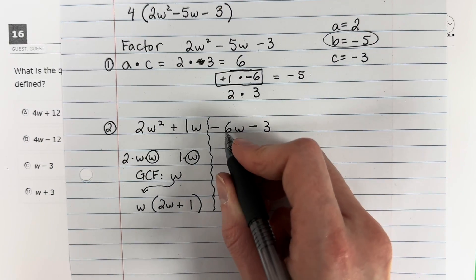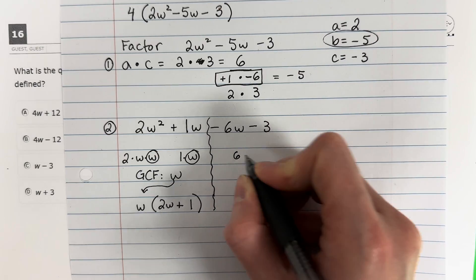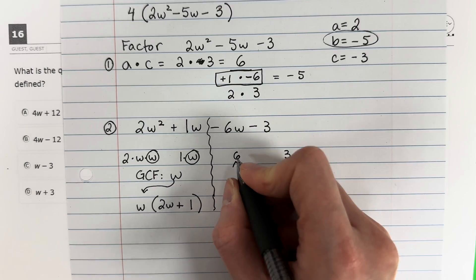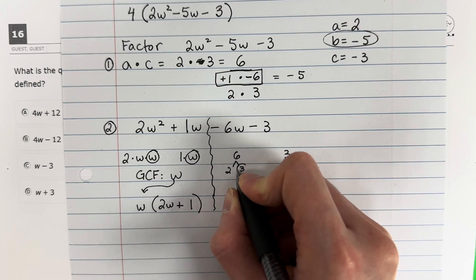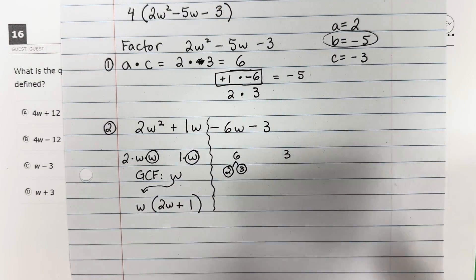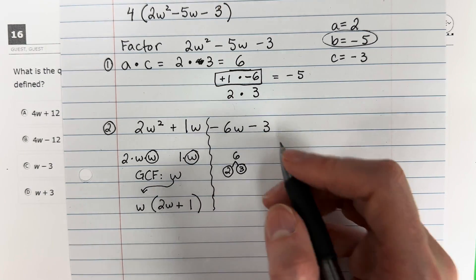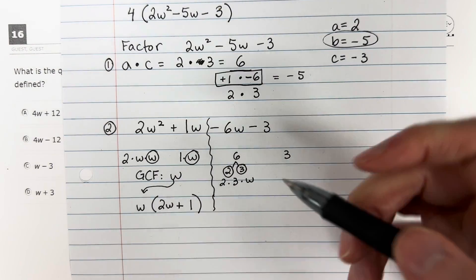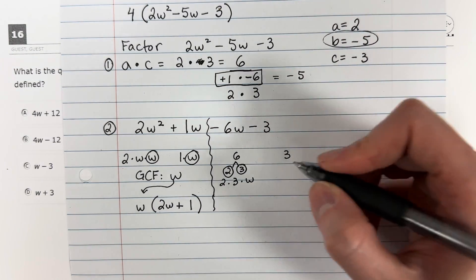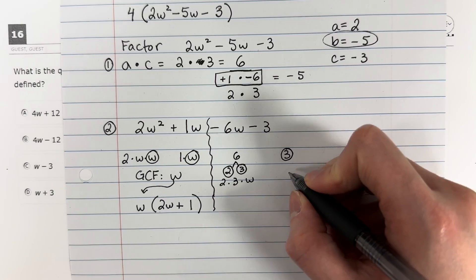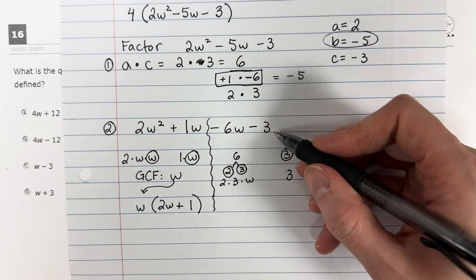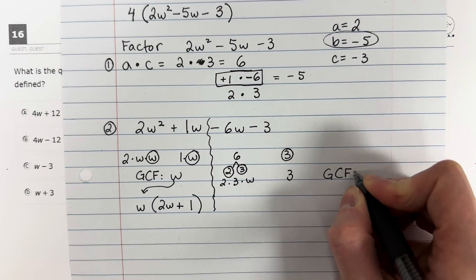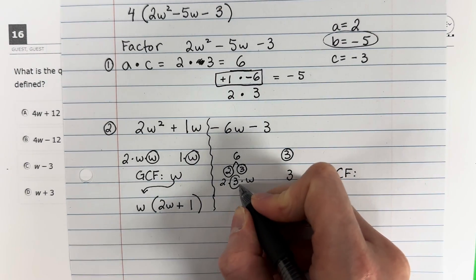Let's go ahead and do the same here. Now ignore the signs for now. 6 and 3. 6 is not prime. I can do 2 times 3 for 6. The factorization of 6w is 2 times 3 times w. 3 is prime. So the factorization of 3 is just 3 and there's no letter there. What do they have the same? The GCF, the greatest common factor. They have a 3 in common.